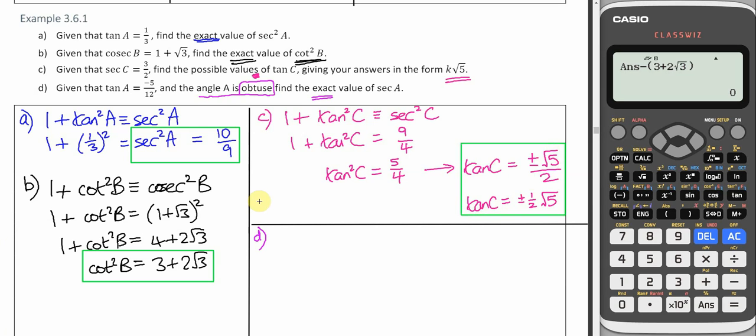Once again, exact value wanted. So we've got tan. We're trying to find sec. Let's start with an identity that links those together.